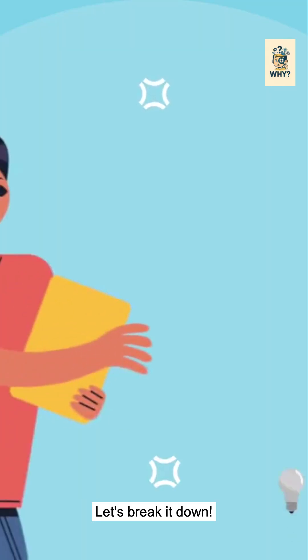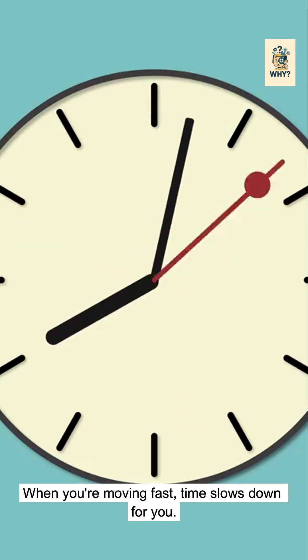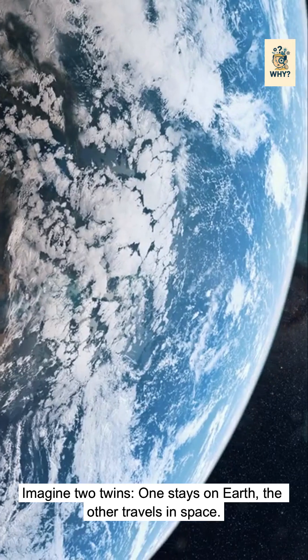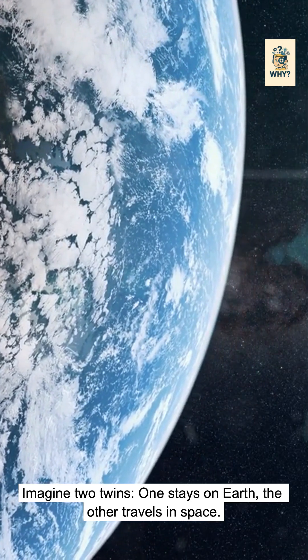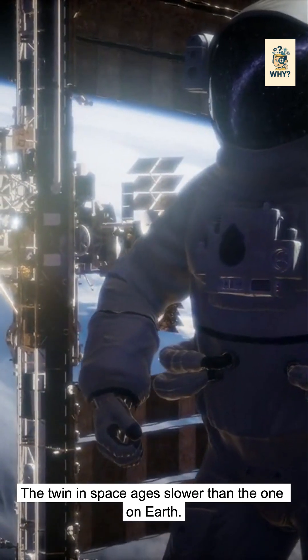Let's break it down. When you're moving fast, time slows down for you. Imagine two twins. One stays on Earth, the other travels in space. The twin in space ages slower than the one on Earth.